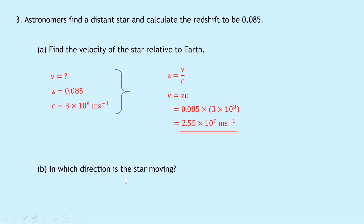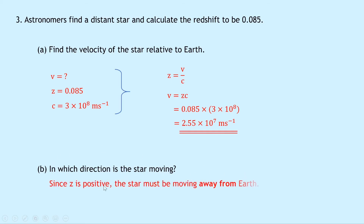Part B says in which direction is the star moving? Since z is positive, the star must be moving away from the Earth. Remember, if z had a negative value, that would indicate a star or galaxy moving towards the Earth — i.e., blueshift.